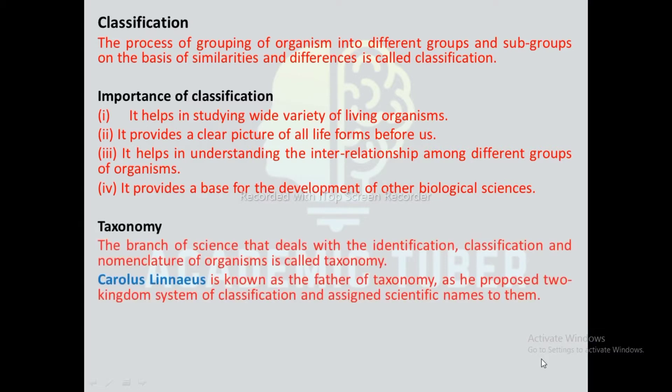Taxonomy: The branch of science that deals with the identification, classification and nomenclature of organisms is called taxonomy. Carolus Linnaeus is known as the father of taxonomy as he proposed the two kingdom system of classification and also gave scientific names to them.